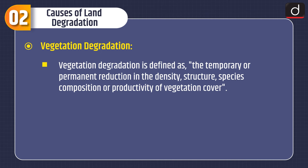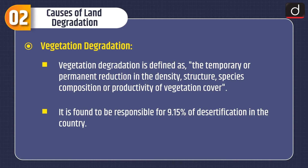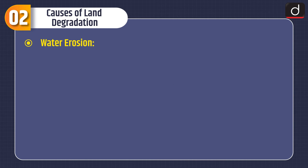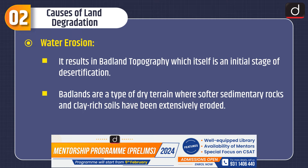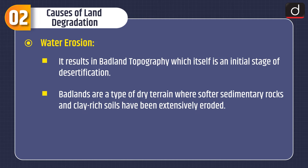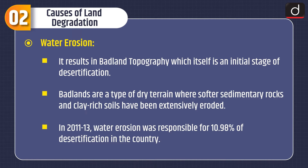Second is vegetation degradation, defined as the temporary or permanent reduction in the density, structure, species composition, or productivity of vegetation cover. It is found to be responsible for 9.15% of desertification in the country. Third is water erosion. It results in badland topography, which itself is an initial stage of desertification. Badlands are a type of dry terrain where softer sedimentary rocks and clay-rich soils have been extensively eroded. In 2011–13, water erosion was responsible for 10.98% of desertification in the country.